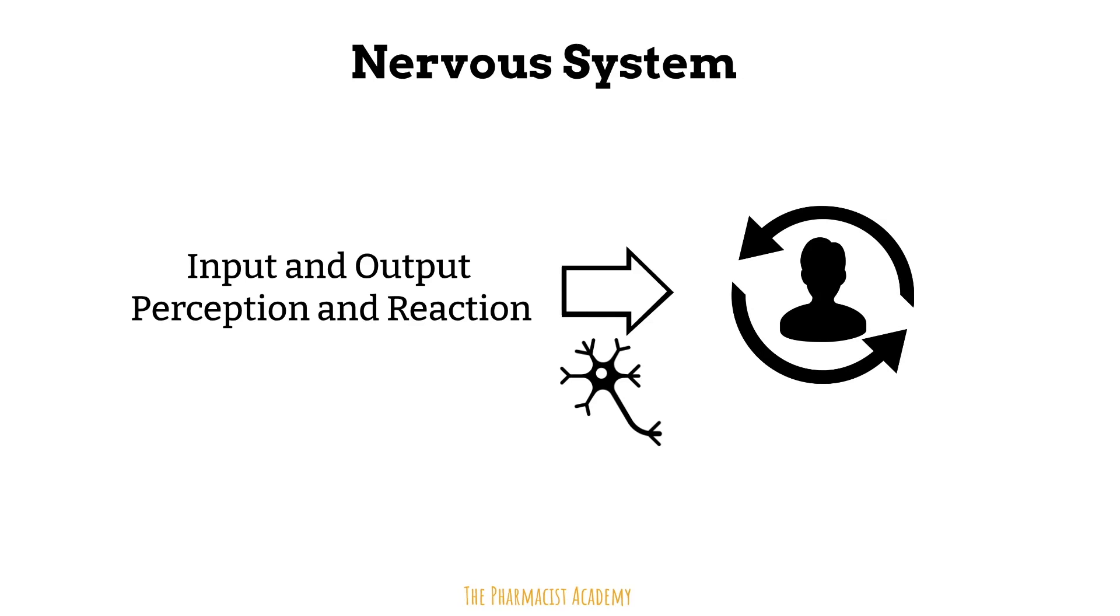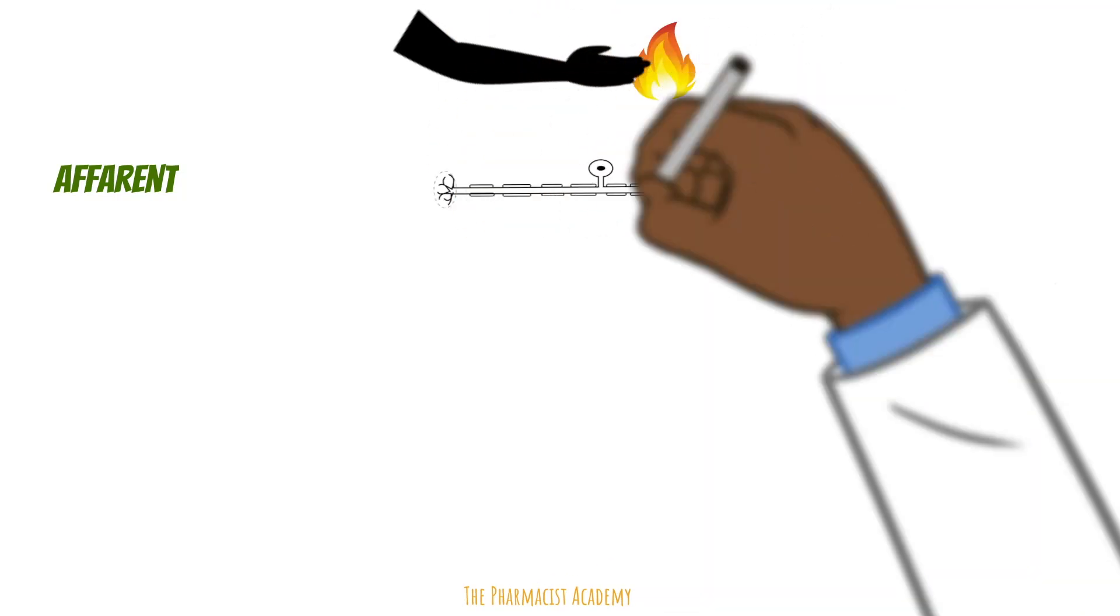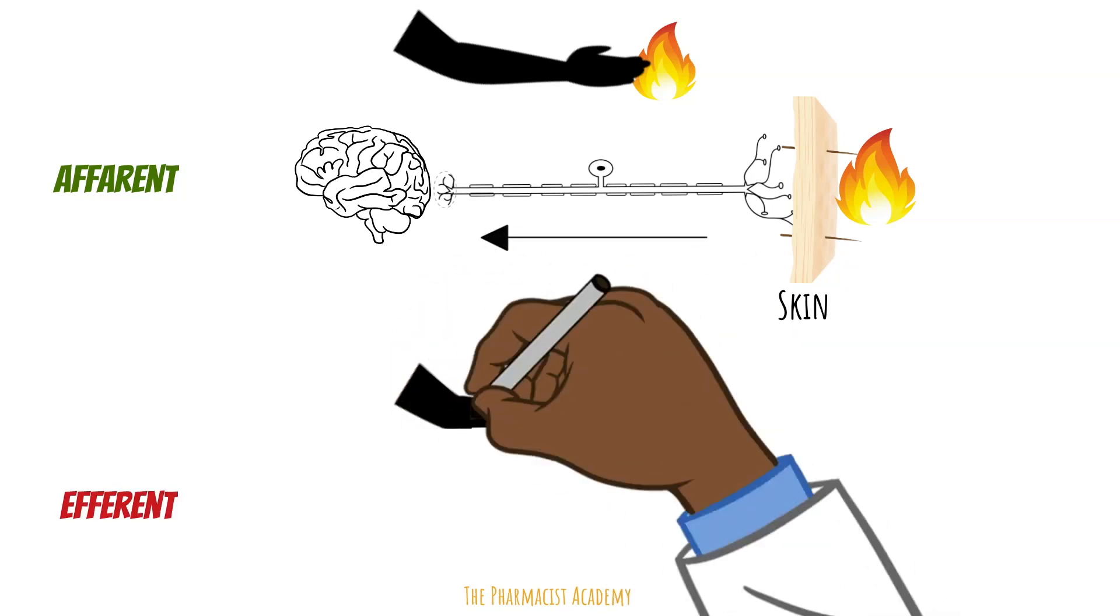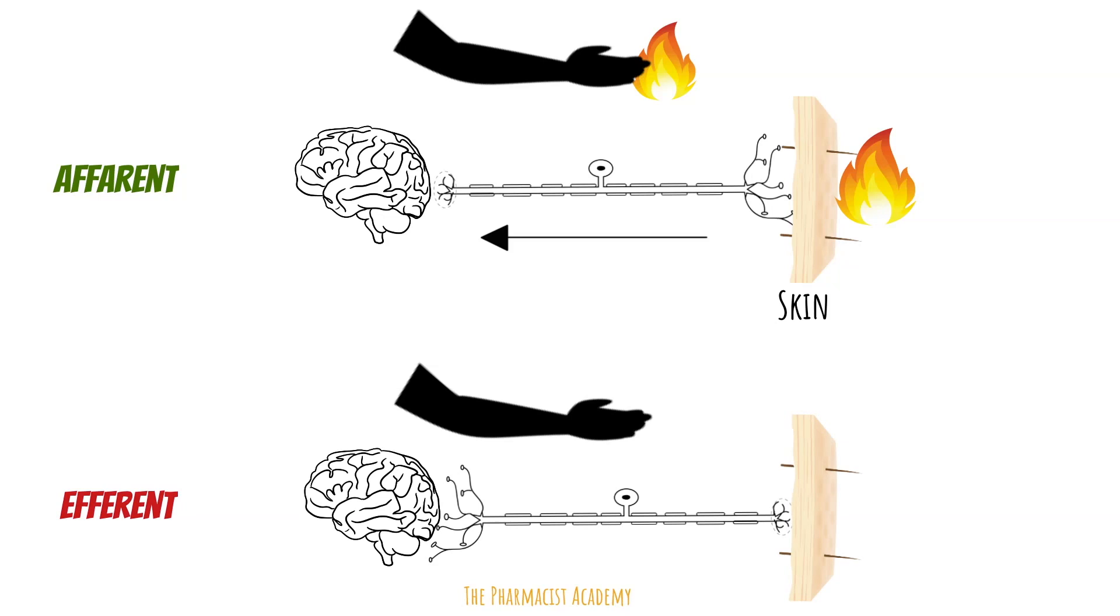So then what's the difference between afferent and efferent neurons in the nervous system? Let's use an example of someone touching fire to help understand. The moment when you touch fire, within less than a second, your afferent nerves attached to the skin of your fingers will send a message to the brain super fast. The brain will then process the information. Immediately, you will move your hands away from the fire, and that's because the brain sends message through the efferent nerves back to your fingers as pain and discomfort.